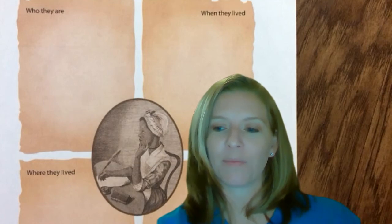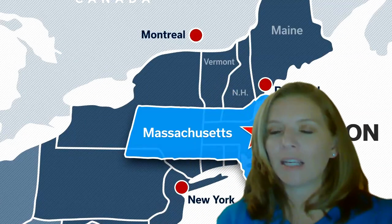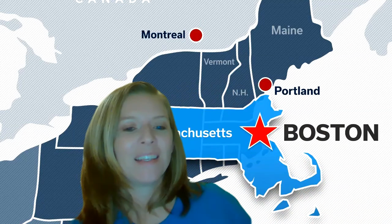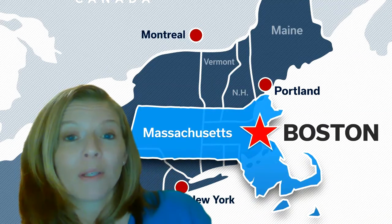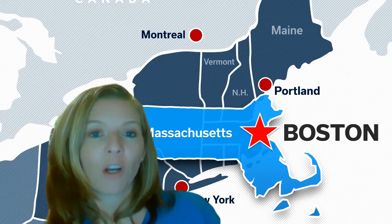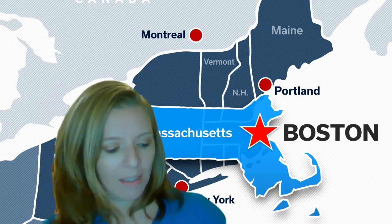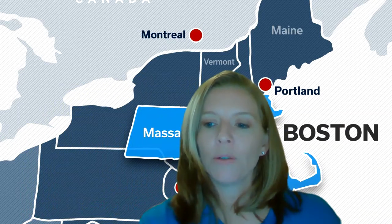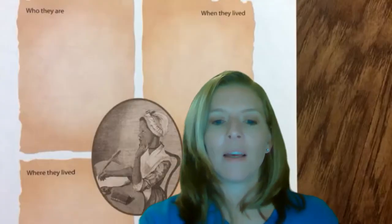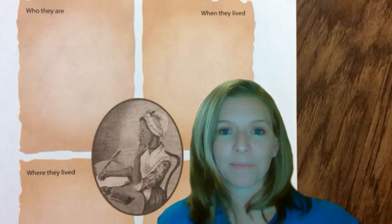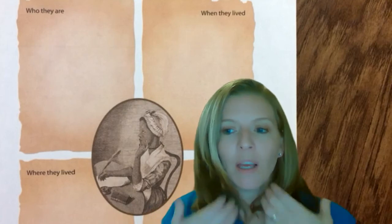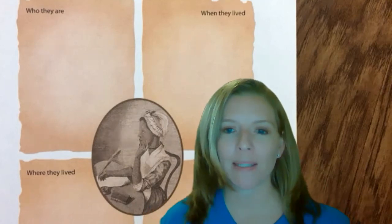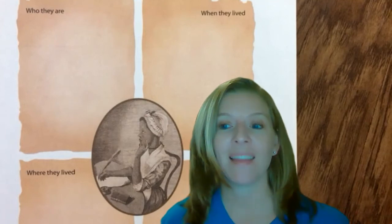Where did Phyllis live? She lived in Boston — and Massachusetts was not a state yet, it was a colony. This was during the time of colonial America with the British colonies. Now, who taught Phyllis how to read and write? Mary and Mrs. Wheatley. Remember, when I ask a question you can challenge yourself by pausing, finding the answer, and then see if you got it right.